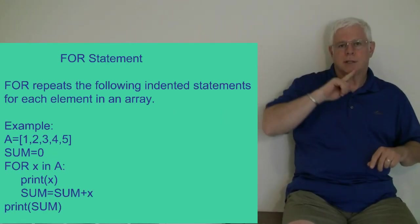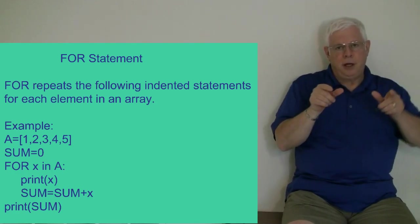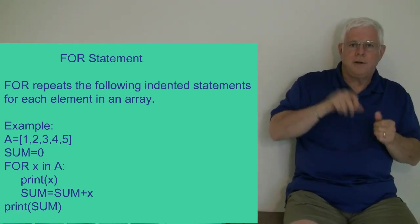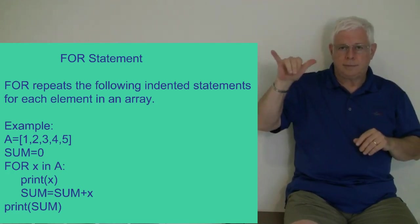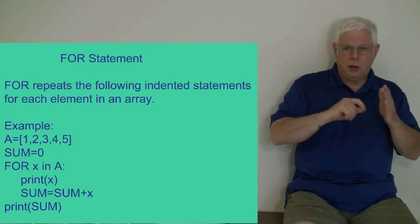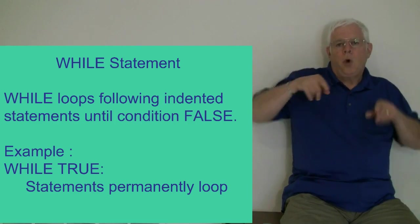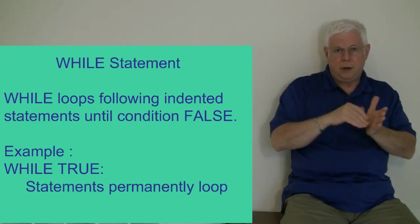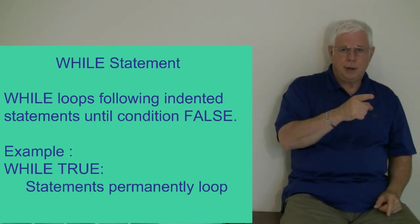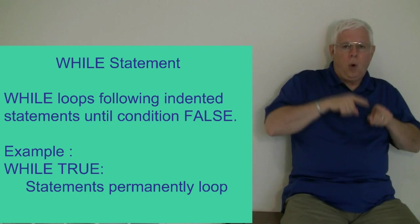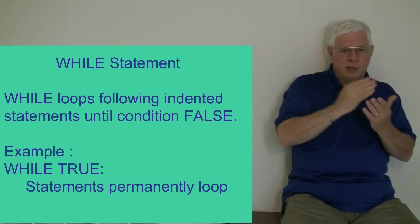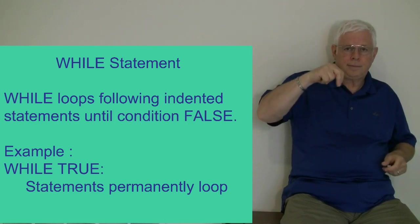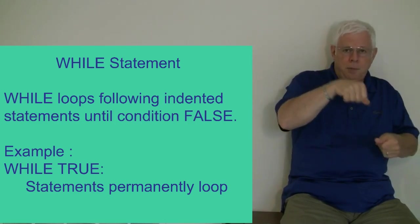The Python for statement allows you to have a group of indented commands that are repeated for each value in an array, and it makes it easier to code your programs. The Python while command allows one or more indented statements to be repeated while a condition is true. If we code it saying while true, it's going to loop and never stop until you press down the control button and then press on the letter C.